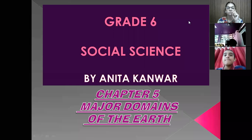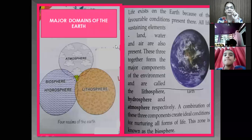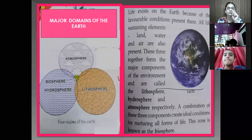Life exists on the earth because of the favorable conditions present. Because all the things we need to sustain life are there on this earth — land, water, air. Everything is present on this earth, so we are able to live our life here. These three together form the major components of the environment.